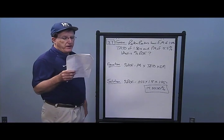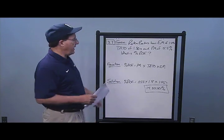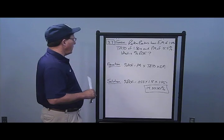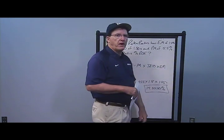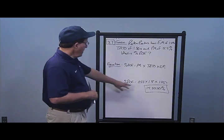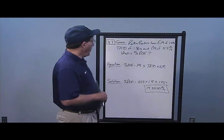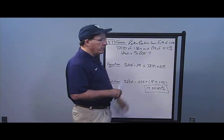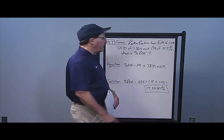In Problem 7, Rates and Readers has an equity multiplier of 1.45 times, total asset turnover of 1.8 times, and a profit margin of 5.5%. What is their return on equity? The equation is ROE equals profit margin times total asset turnover times equity multiplier. Multiplying 0.055 times 1.8 times 1.45 gives a return on equity of 14.3550%. That is the answer to Problem 7.